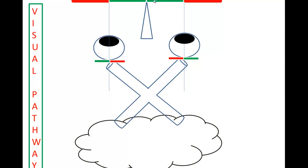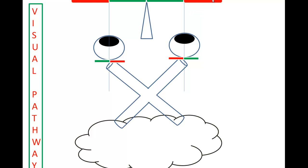The section closest to the nose is the nasal visual field — on both sides — so this is the nasal visual field of the right eye and this is the nasal visual field of the left eye. The side closest to the temple is the temporal visual field, shown in red on the right and red on the left. Now, think about the retina. Although there is no clear anatomical demarcation, consider the retina divided into two portions: the portion closer to the nose is the nasal half of the retina, and the portion away from the nose is the temporal half.